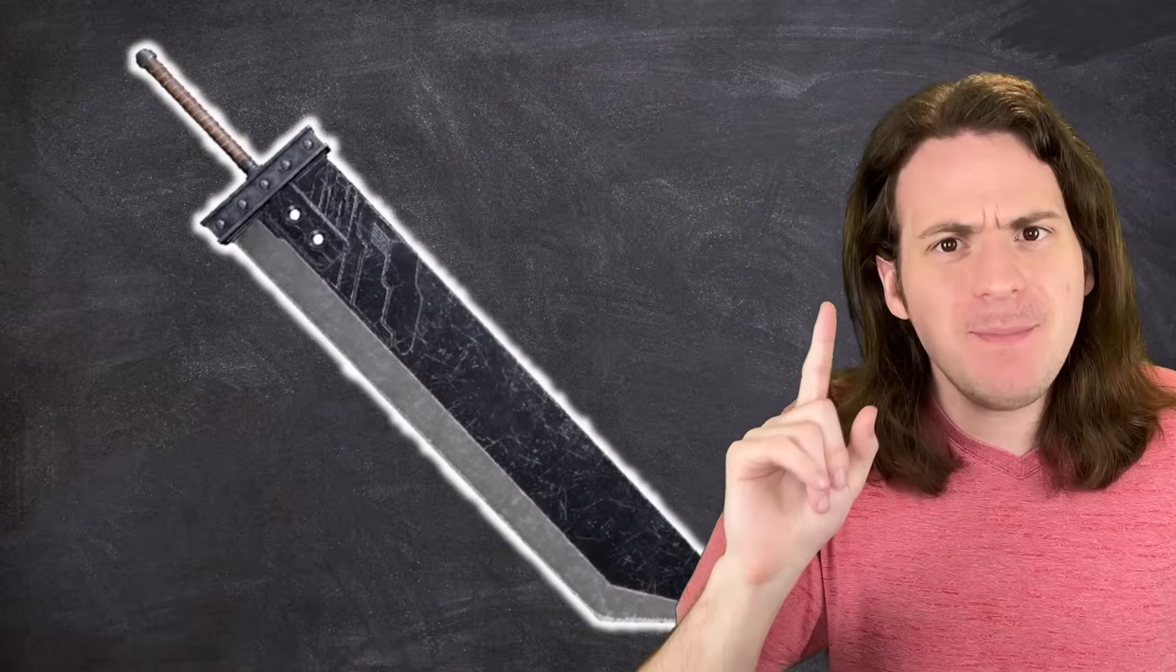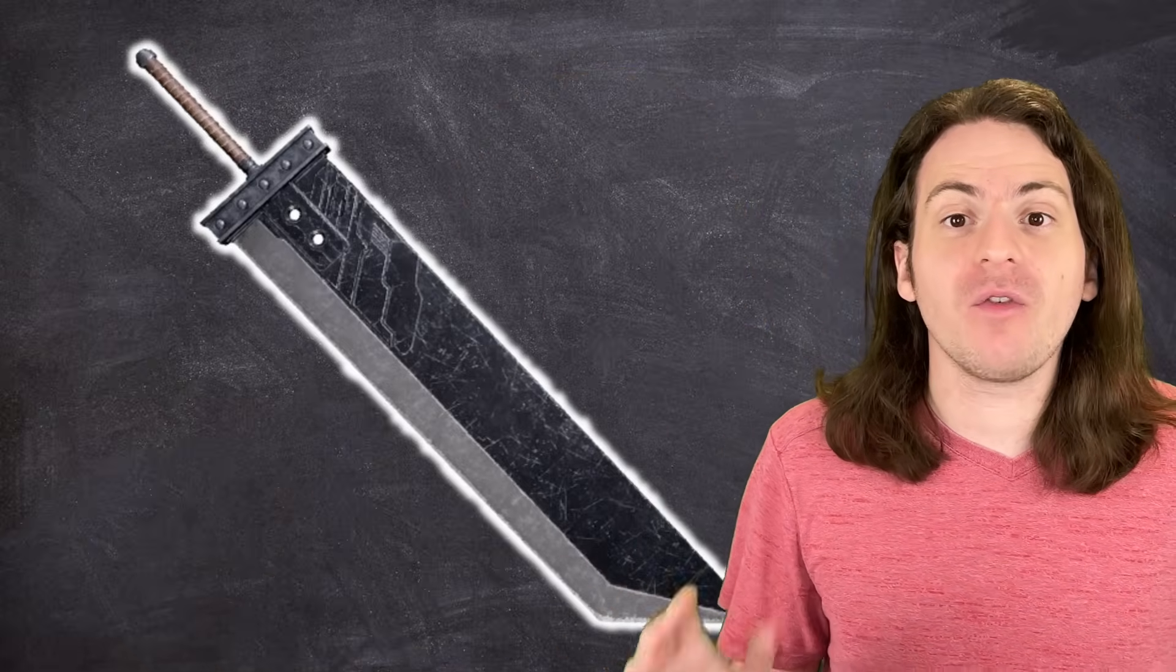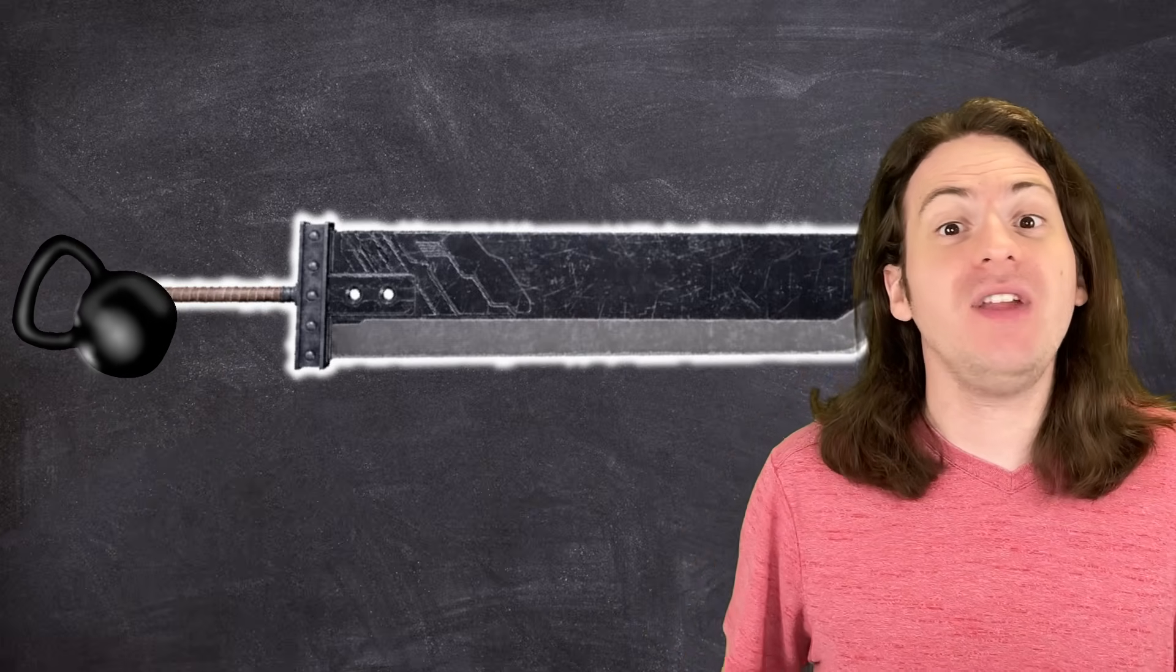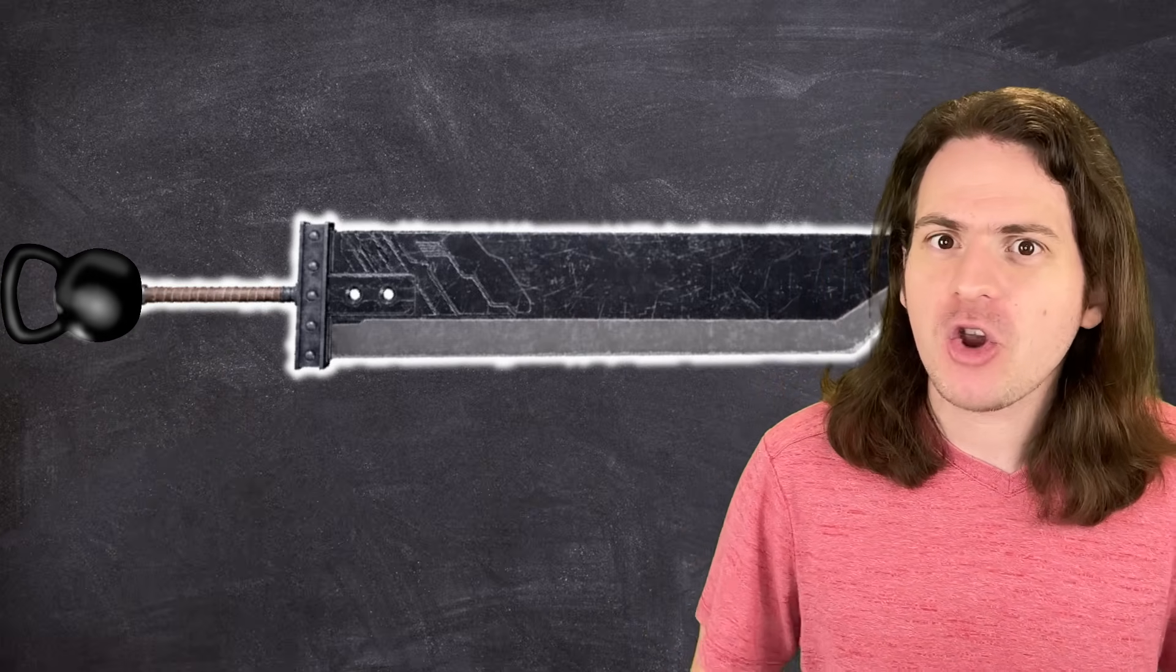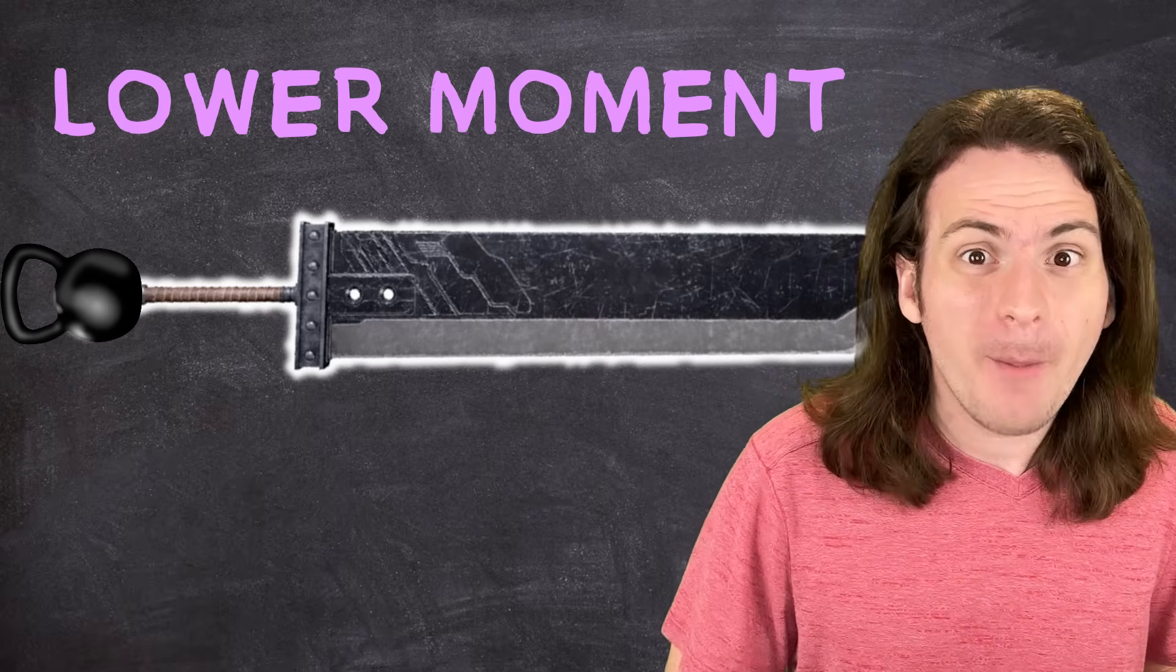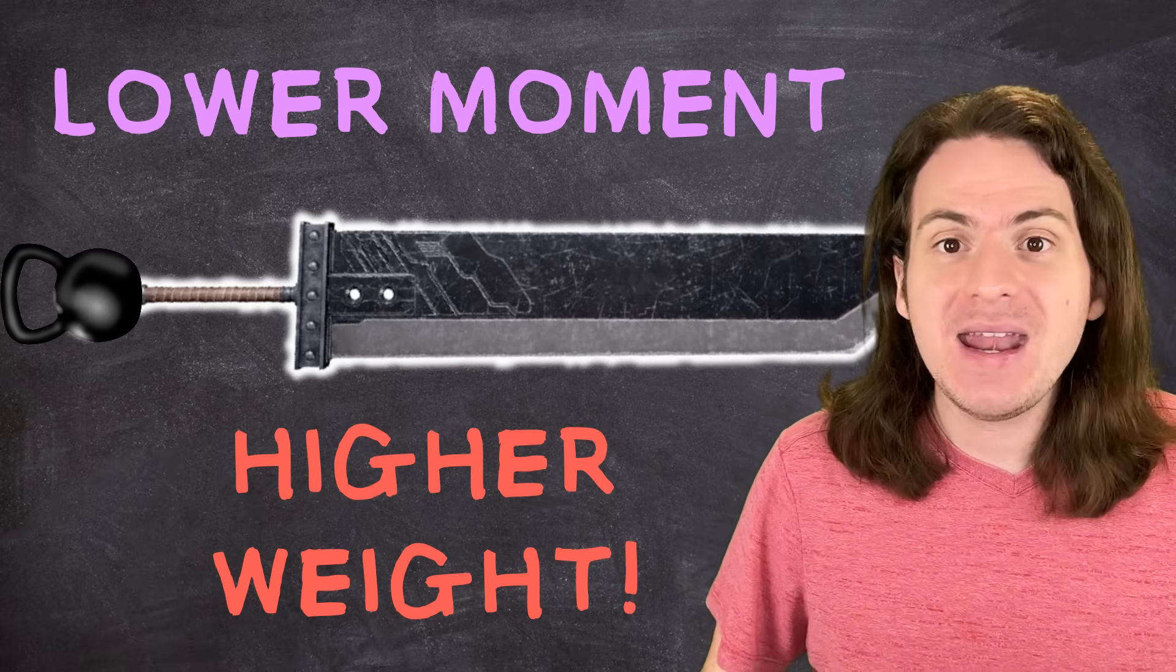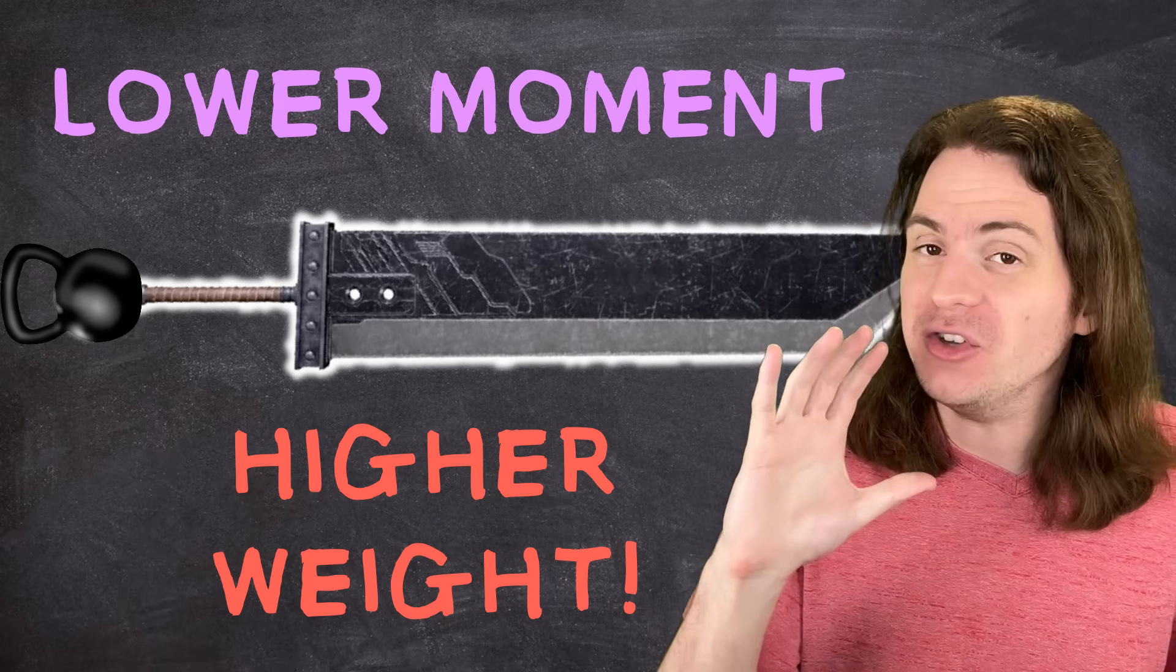Or if you want to keep that whole blade nice and heavy, another way to shift the center of mass is by adding more stuff to the other side. Give that sword a nice big heavy pommel. Doing this, you could in theory create a sword that feels lighter but is actually heavier. You get all the pros of a long, hefty blade and the maneuverability and ease of use of a smaller one. It's a win-win!